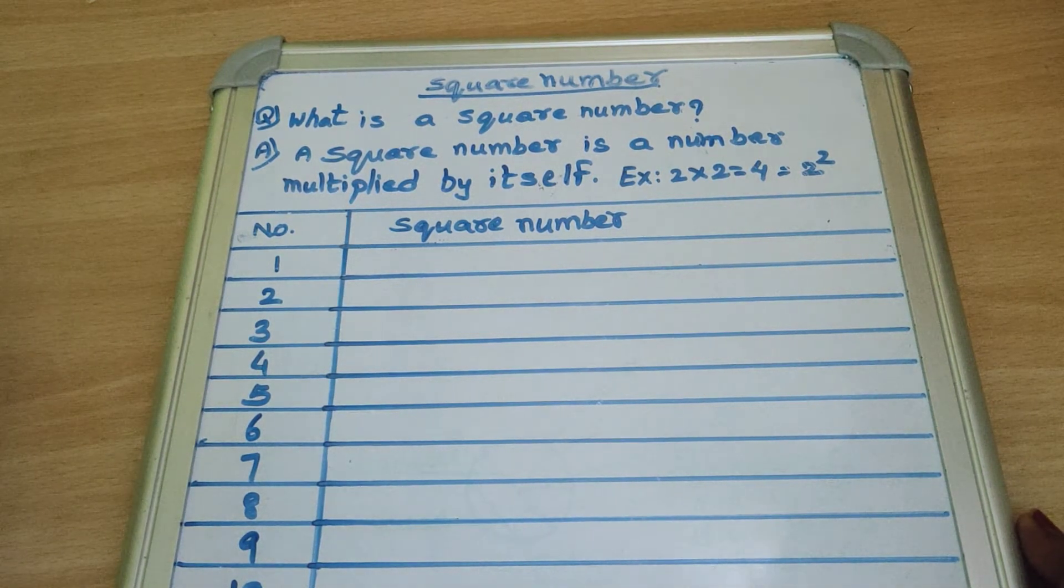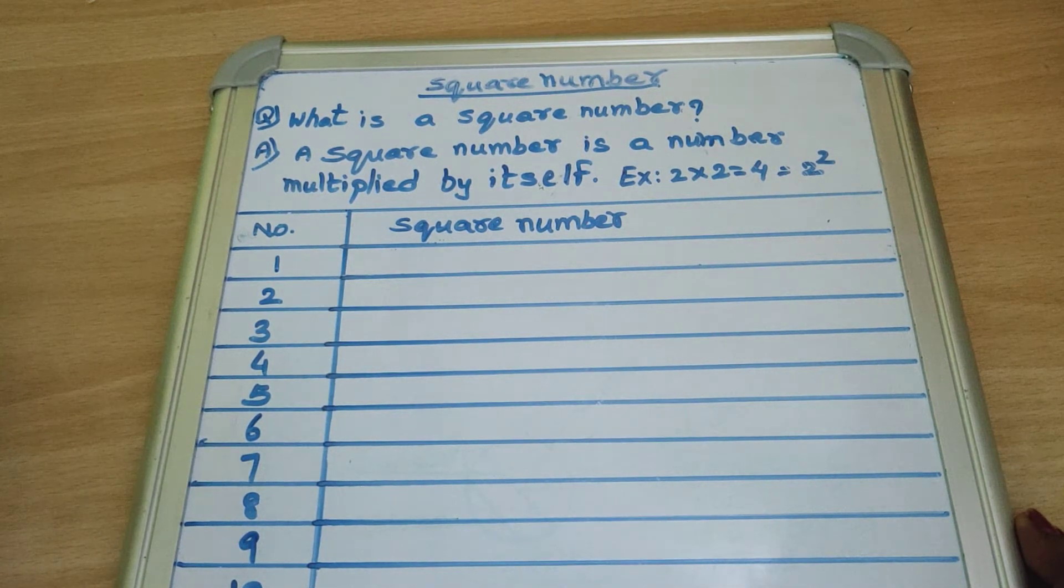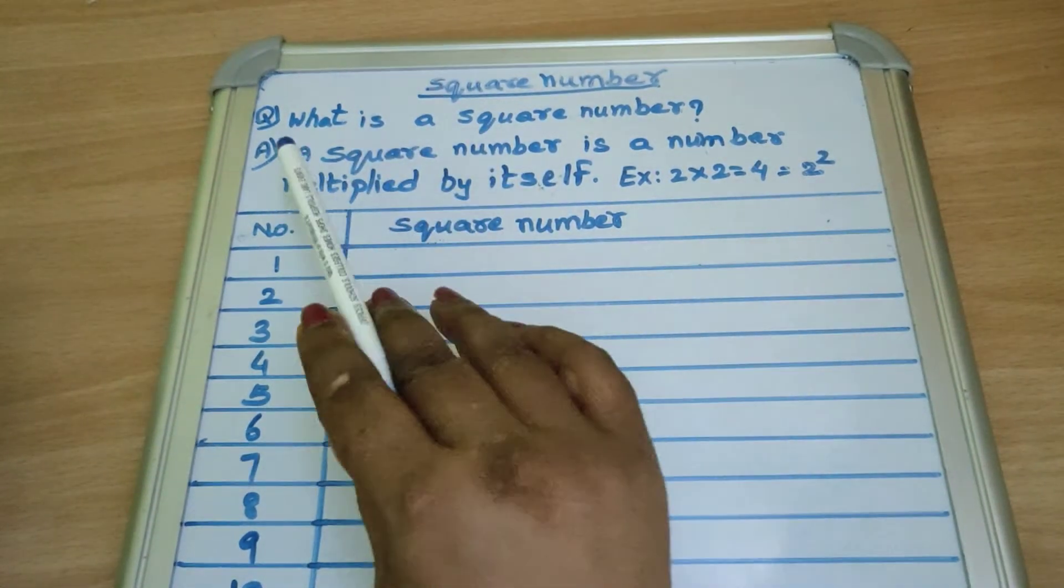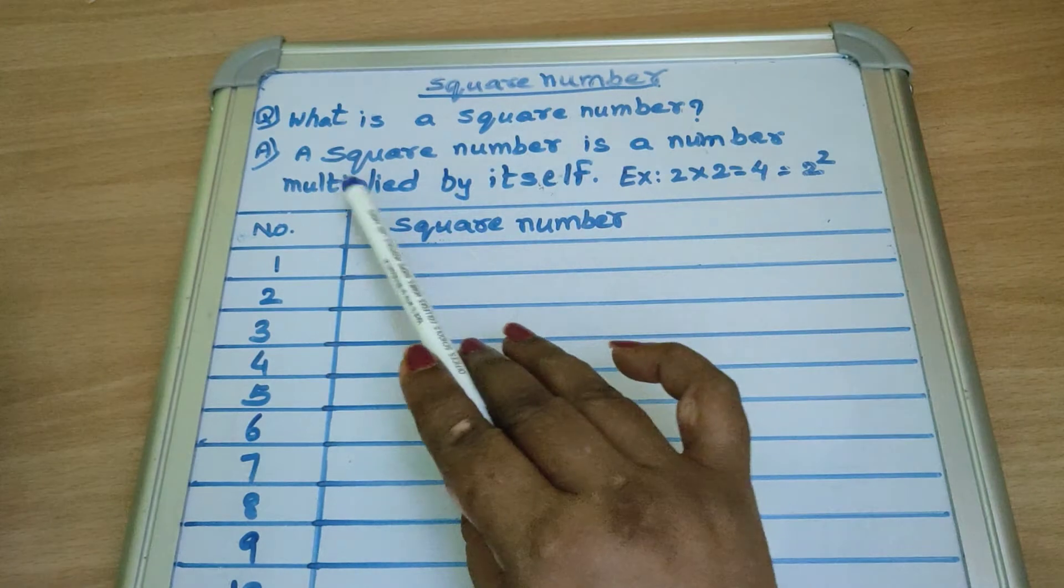Hello students, welcome back to the channel. Today we learn square number. What is a square number? A square number is a number multiplied by itself.